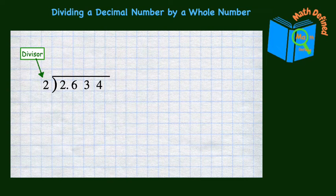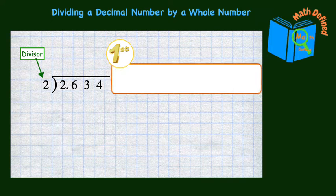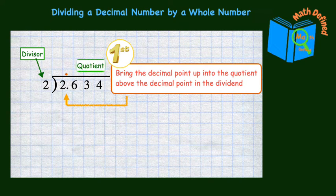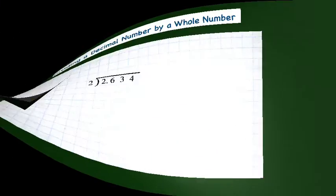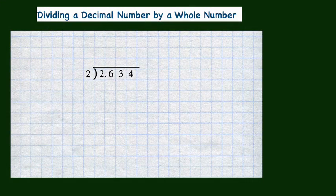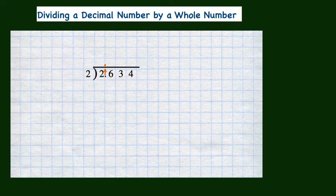When the divisor is a whole number, the first step is to bring the decimal point up into the quotient above the decimal point in the dividend. Then you just divide like you normally would until you have a zero remainder or a repeating pattern of one or more digits. Let's tackle this division problem first.